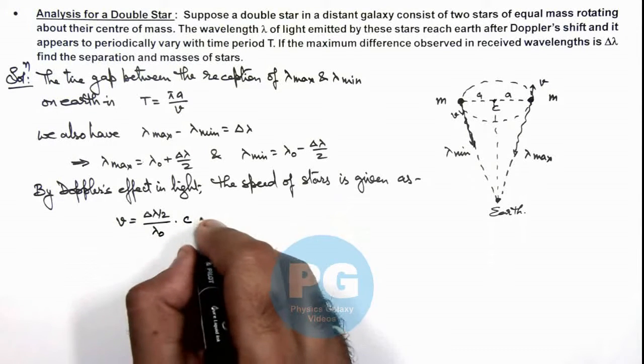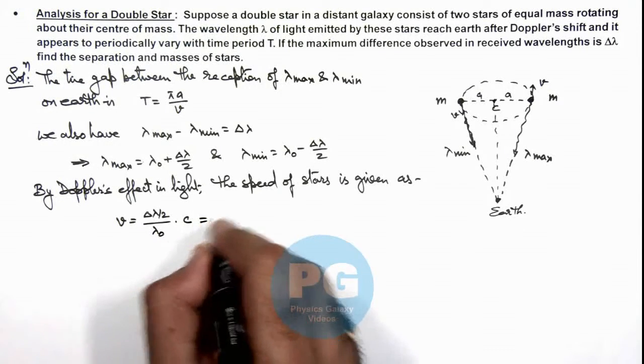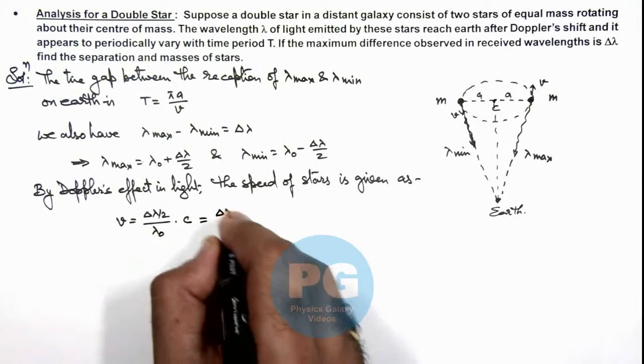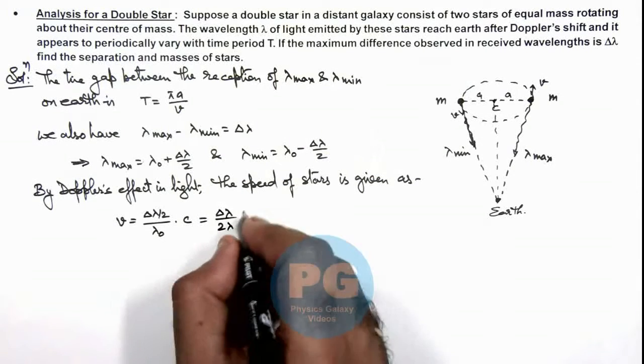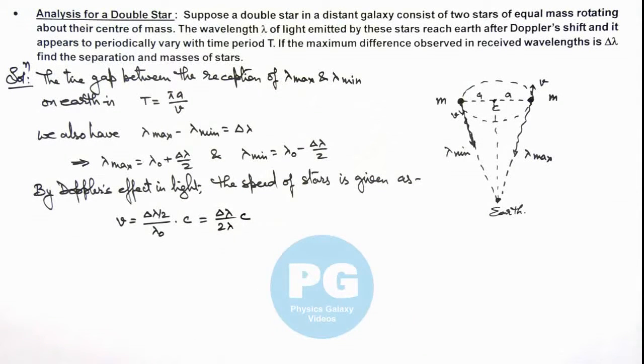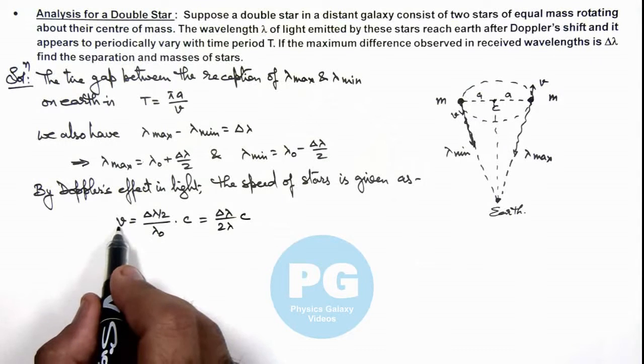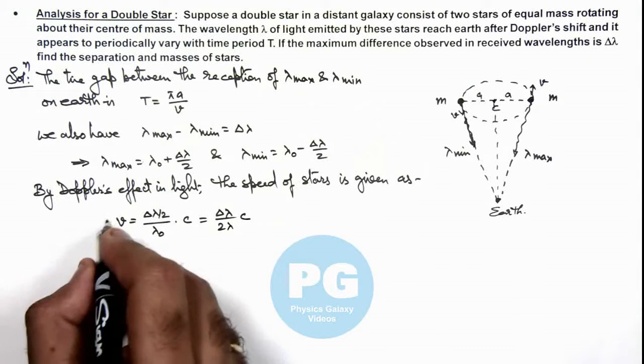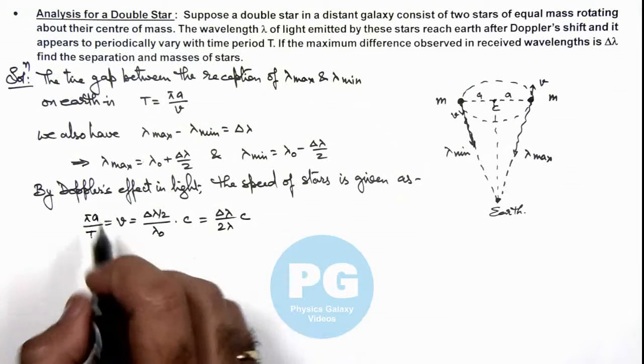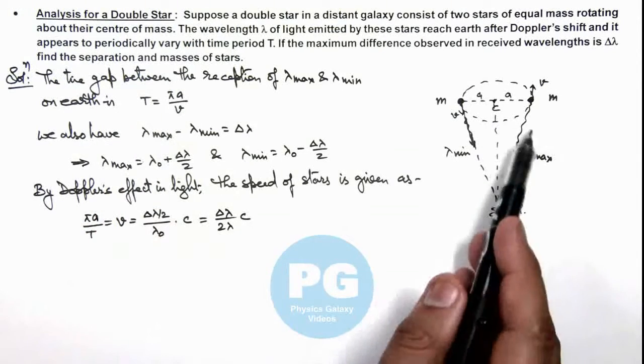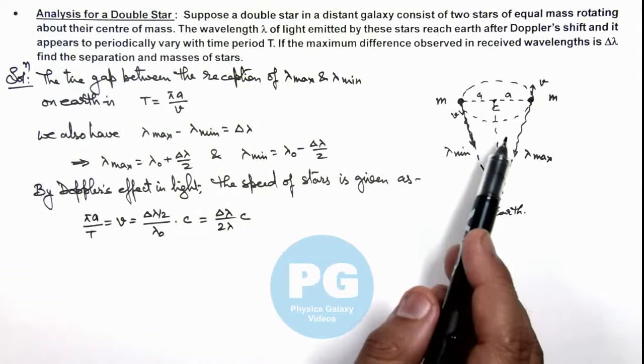Which can be given as in this situation Δλ/2λ₀, we are already given as λ so we can use it λc. And here the value of speed we can use as πa/T, as T is the time period after which the max and minimum wavelengths are being received.